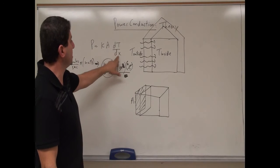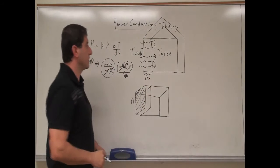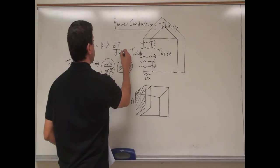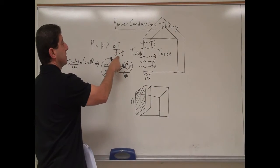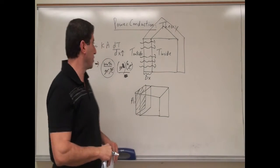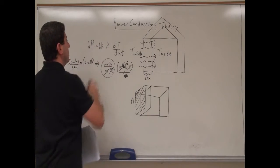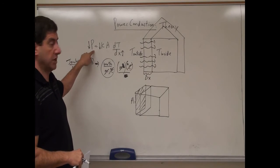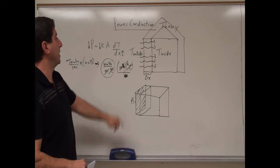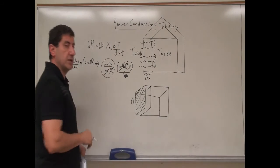Delta x is the thickness of the material. The thicker the wall of the house, the better — the bigger the thickness, the less power you lose. For good insulation you want the conductivity to be low, the thickness to be large, and the surface area of the house to be small.